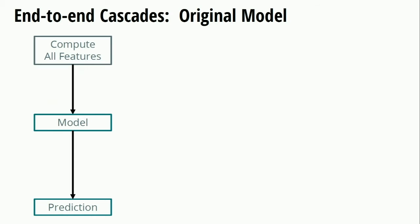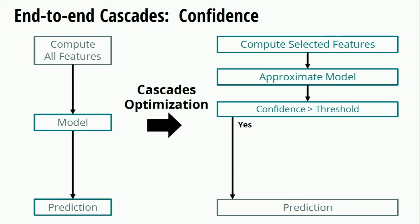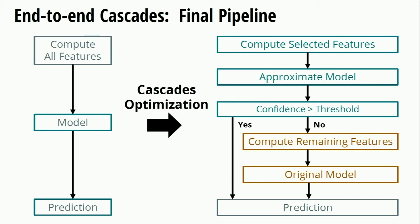By default, an ML inference application computes all features for all data inputs, predicts with a model, and returns that prediction. Willump instead computes a handful of high-value, low-cost selected features for each data input and predicts with an approximate model, then returns that prediction. However, the approximate model is not accurate enough to classify all data inputs by itself. Therefore, we only return its prediction if its confidence is above a threshold — the cascade threshold. If the confidence is not above that threshold, we compute all remaining features and cascade to the original model.